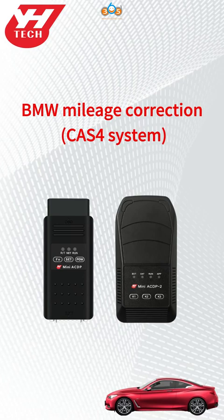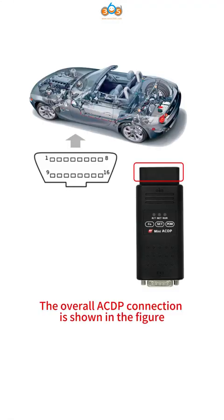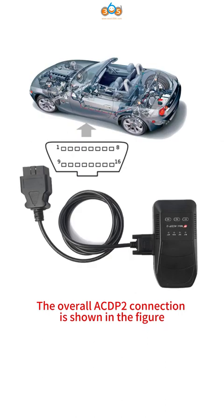This video will show you how to do BMW CAS 4 mileage correction by ACDP and ACDP 2. We will reset the CAS mileage via OBD and correct the cluster mileage in ICP mode. The overall ACDP connection is shown in the figure, and the overall ACDP 2 connection is also shown in the figure.